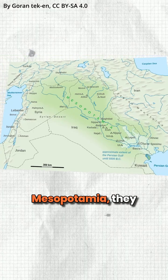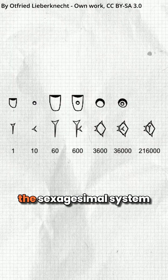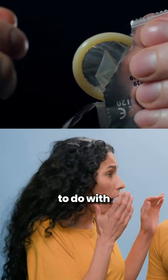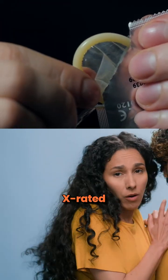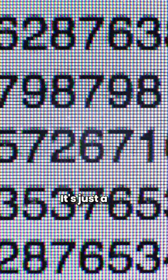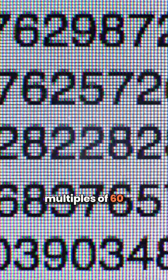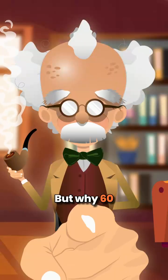Way back in ancient Mesopotamia, they stumbled upon a nifty little system called the sexagesimal system. It's got nothing to do with anything X-rated. It's just a fancy way of saying they liked their numbers in multiples of 60. But why 60, you ask?